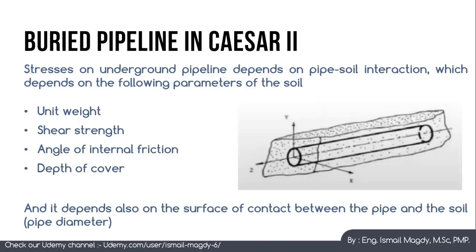We have learned earlier in section 1 the forces that affect any piping system. However, the stresses on any underground pipeline rely mainly on the pipe-to-soil interaction, which depends on the following parameters of the soil: unit weight of the soil and the depth of soil cover — based on this data, the weight of the backfilling soil above the pipeline is calculated — the shear strength of the soil, which governs the resistance of the soil to pipeline deformations, and the angle of internal friction, which governs the soil strength.